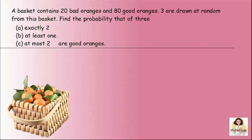A basket contains 20 bad oranges and 80 good oranges. Three are drawn at random from this basket. Find the probability that of three: first part, exactly two; second part, at least one; and at most two are good oranges. The total is 100 oranges.